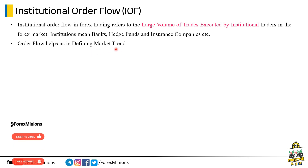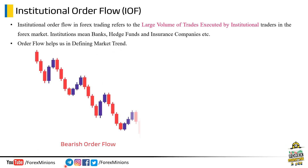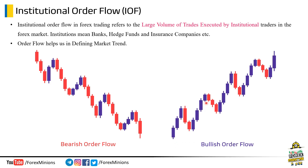These are some simple schematic diagrams to understand this flow. Here, this is a bearish order flow, because big institutions are executing large volumes on the sell side. Similarly, this chart pattern indicates bullish order flow. Now let's understand this concept in more detail with some logical reasoning.